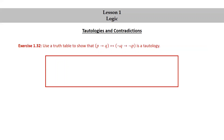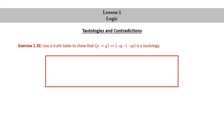Let's try an exercise. Use a truth table to show that p implies q if and only if not q implies not p is a tautology. Now's a good time to pause the video, try to write out this truth table yourself, then resume the video and compare your truth table with mine.